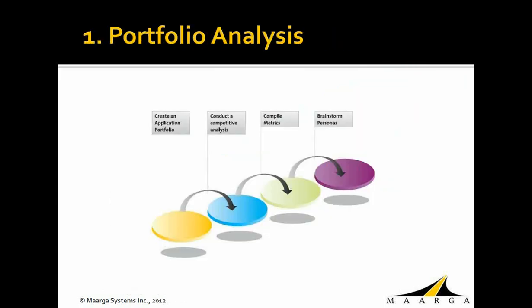The first step is portfolio analysis. When an organization first takes the step of extending applications to mobile, they need to be very careful in choosing the right application. A portfolio analysis should be done to understand the application landscape — what applications exist, how each is being used, which are business critical, and the usage potential of each. At the end of the analysis, there will be a clear indication of how many applications exist and which should be prioritized for mobile enablement.